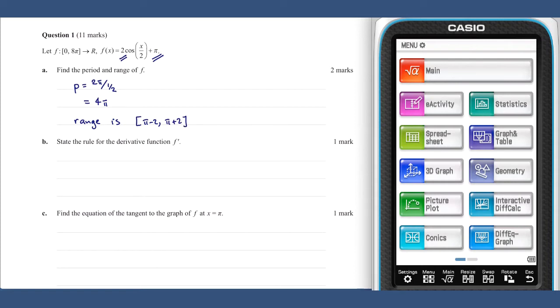A rule for the derivative function can be found using the chain rule. F dashed x equals 2 multiplied by minus sine of x on 2 multiplied by half plus 0, which simplifies to minus sine of x on 2.